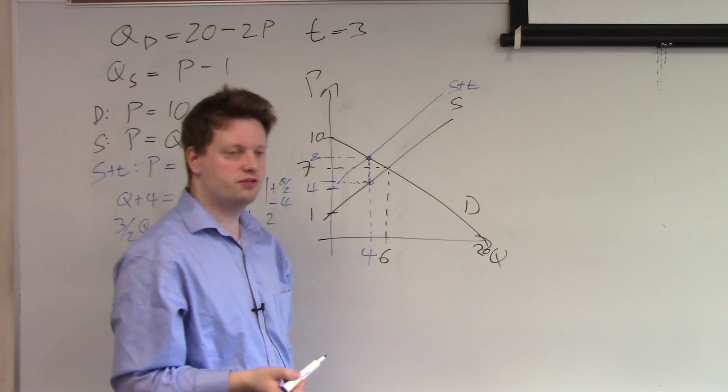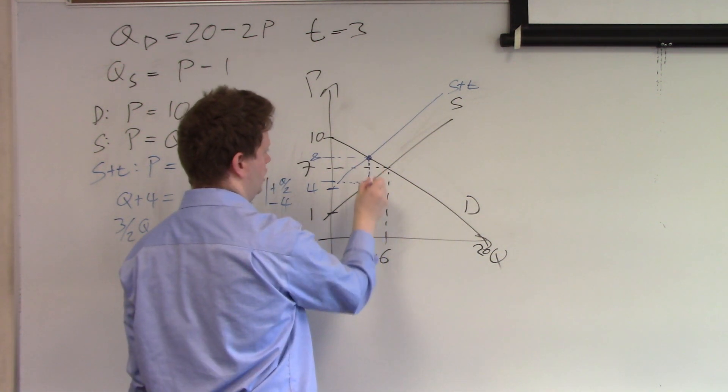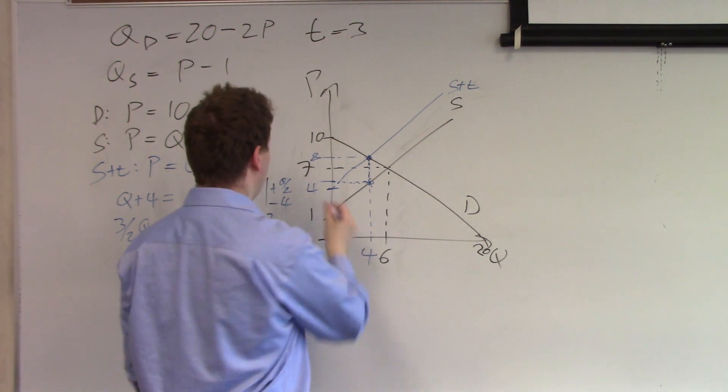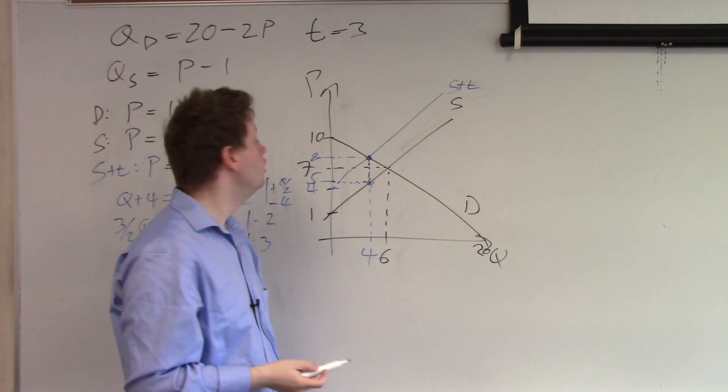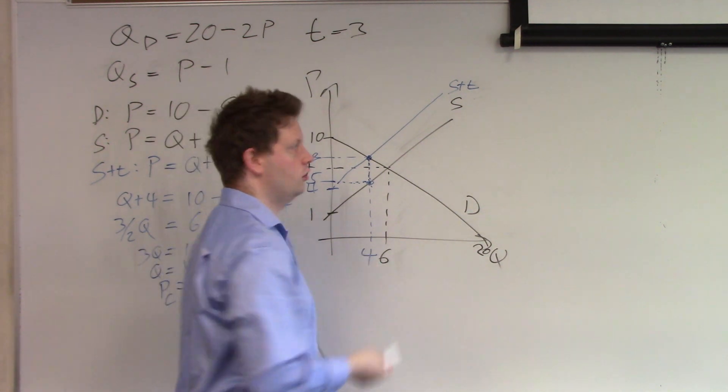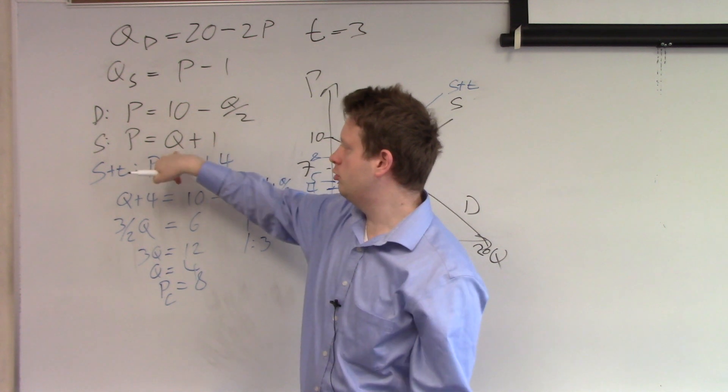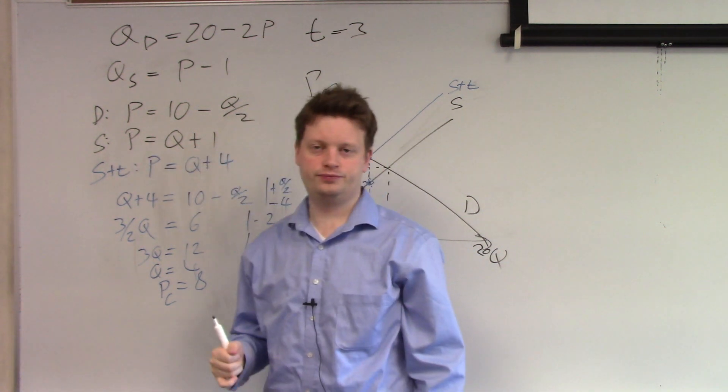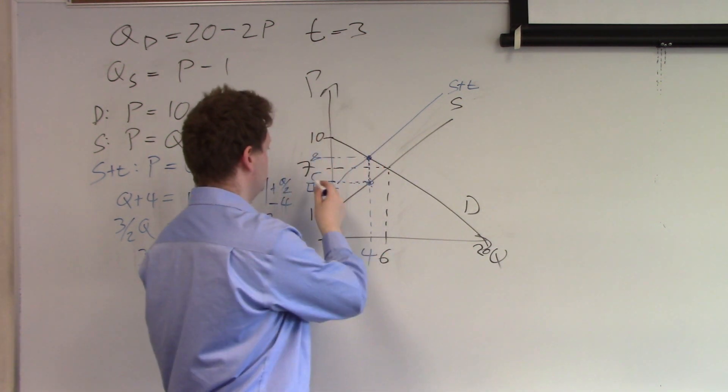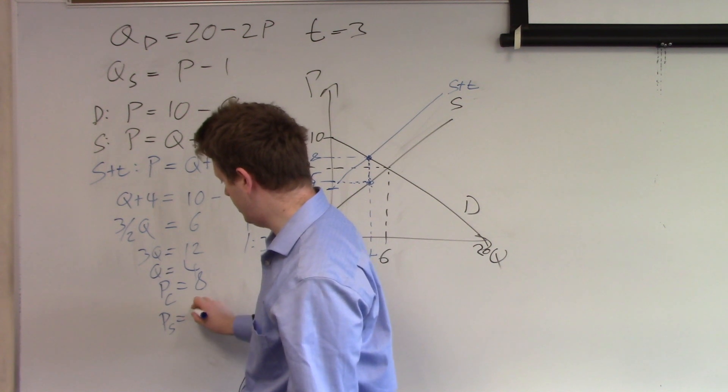There's essentially two ways of calculating this point. The first is we know we shifted this curve by the amount of tax so by 3 and so 8 minus 3 is 5. The second way is we plug in 4 into this equation here. If you plug in 4, a quantity of 4 plus 1 gives us the price, 4 plus 1 is 5. So the price suppliers get is equal to 5.